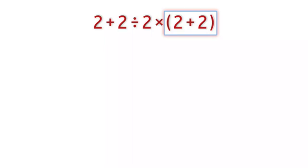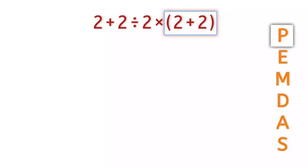So in this expression, since we have parentheses, first we need to simplify everything inside the parentheses. According to PEMDAS rule, 2 plus 2 can be written as 4. Now we have 2 plus 2 divided by 2 times 4.